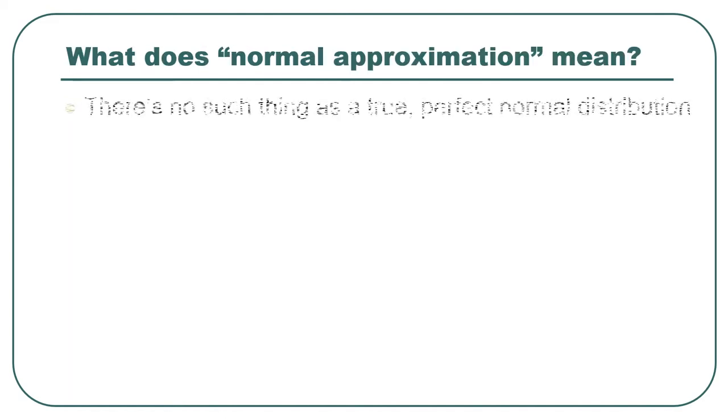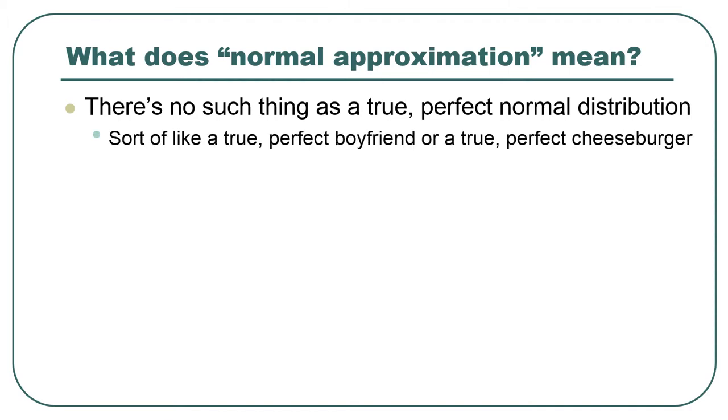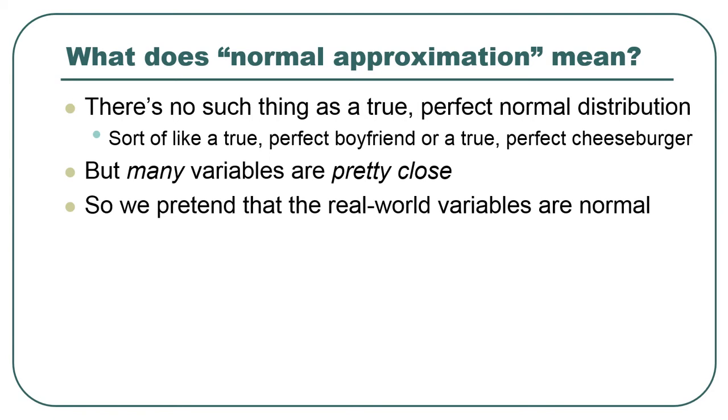So what does the normal approximation actually mean? When we say we are using the normal approximation to solve a problem, it means we're using something beautiful, pure, and wonderful that doesn't actually exist in the real world, but we're applying it to something that, at least for whatever purposes we have right then, is close enough to that beautiful, perfect, wonderful thing. So many variables are pretty close to normal, even though they're not perfectly normal. Nothing is perfectly normal in real life. It's a theoretical abstraction. It only exists in, like, Plato's mind or something, a mathematical space.